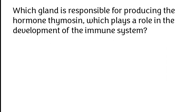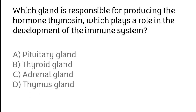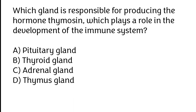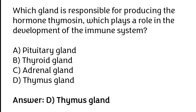Which gland is responsible for producing the hormone thymosin, which plays a role in the development of the immune system? Pituitary gland, Thyroid gland, Adrenal gland, Thymus gland. The correct answer is Option D — the Thymus gland is responsible for producing thymosin, which plays a role in the development of the immune system.